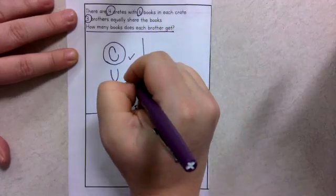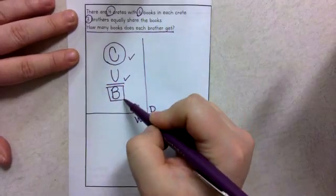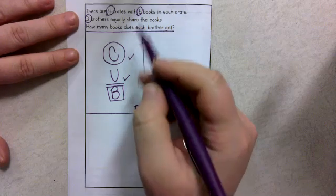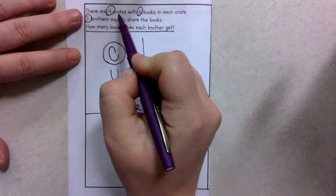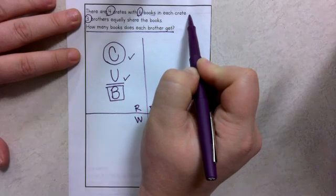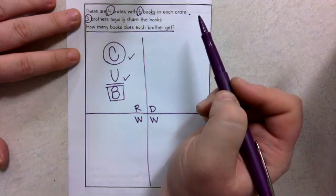I've taken care of the first two steps of CUB. And then for my last step of CUB, the boxing piece, I have to start at the beginning. There are four crates with six books in each crate. Are there any math words that I could box?